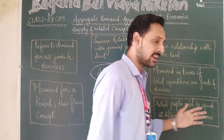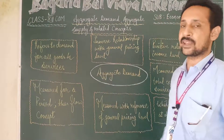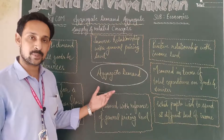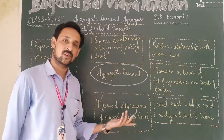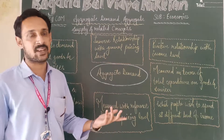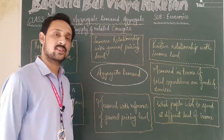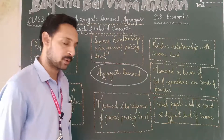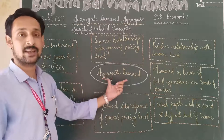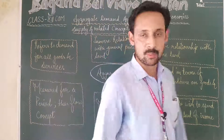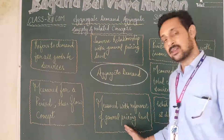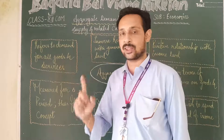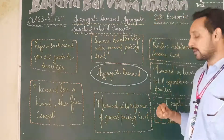Aggregate demand can be defined as the sum total of planned expenditure — whether in the form of consumption or investment — that people wish to spend at different levels of income. Questions from any of these points can appear in one-mark questions: the general pricing level relationship, the flow concept nature, or the fact that it relates to all goods and services rather than any single good.